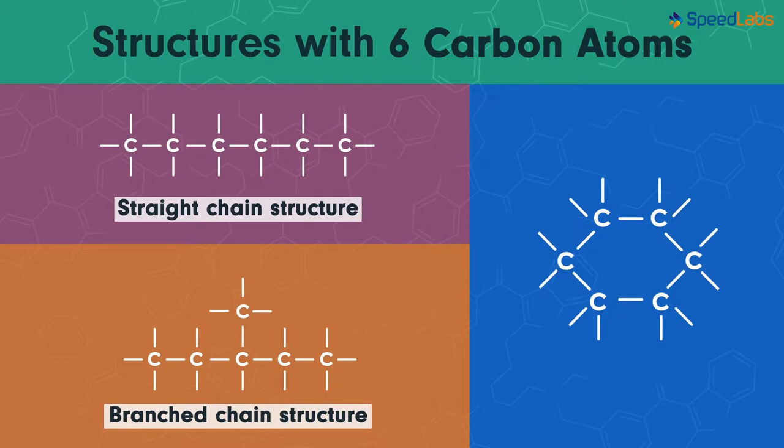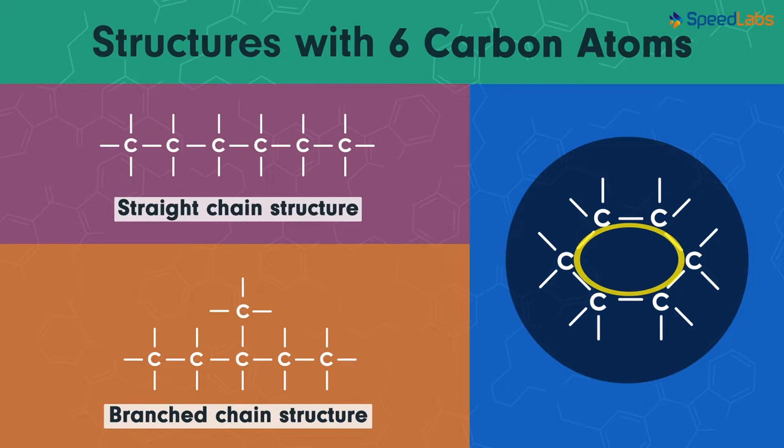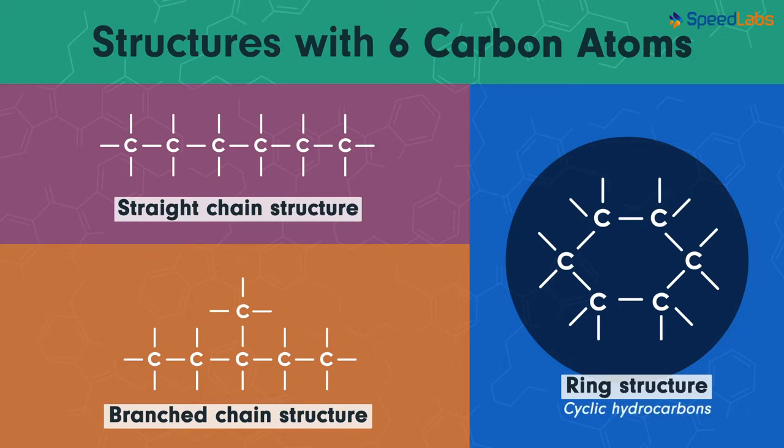The last type is that of complex compounds as they have carbon atoms in the form of rings. Such types are the examples of ring structures of hydrocarbons. They are also called cyclic hydrocarbons.